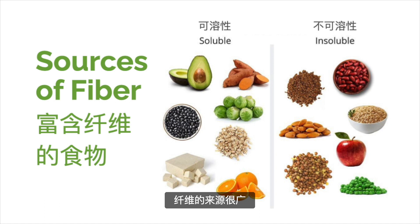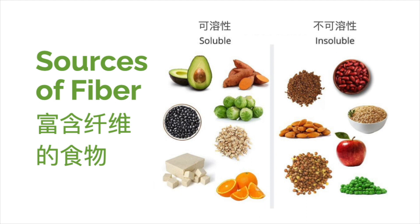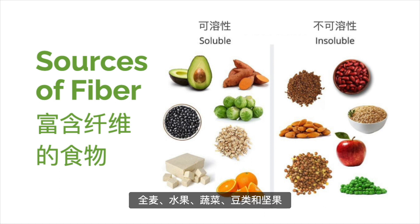When it comes to the sources of fiber, they are plentiful. In fact, fiber is one of the most abundant components of the Earth's biomass. Some of the common sources of fiber include whole grains, fruits, vegetables, legumes, and nuts.